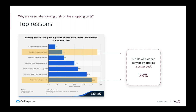You can bundle these reasons together and work backwards to retarget your users. For example, the first group includes people affected by unexpected shipping costs and no coupon code — people heavily influenced by price who may be comparing other websites. If you improve your communication and offer them a better deal, around 33% of people who abandoned could potentially be re-engaged.